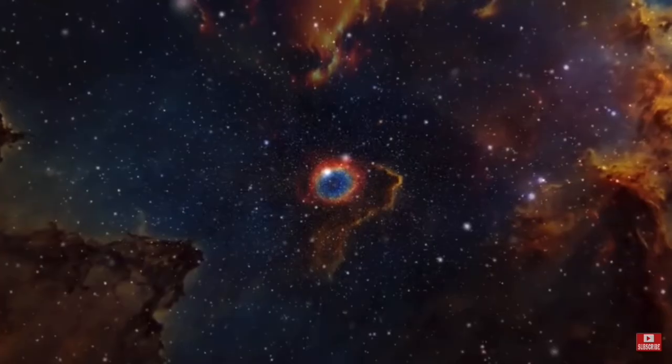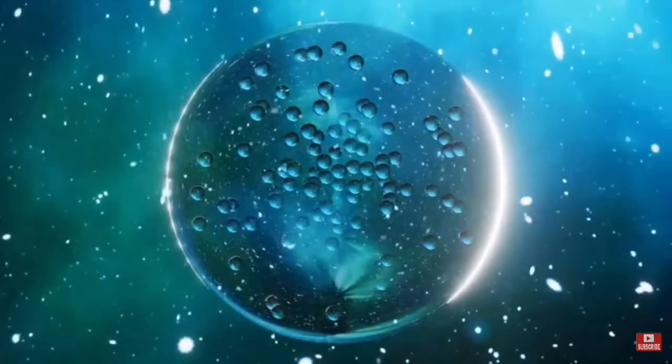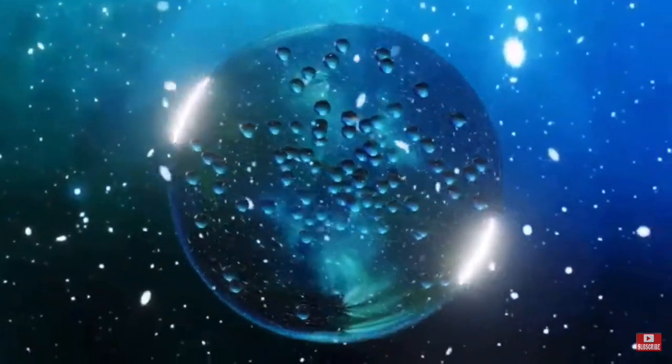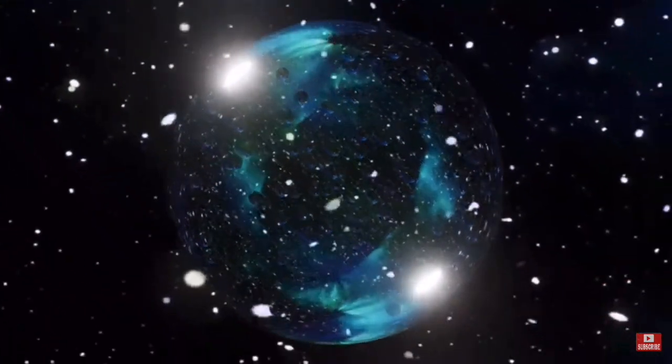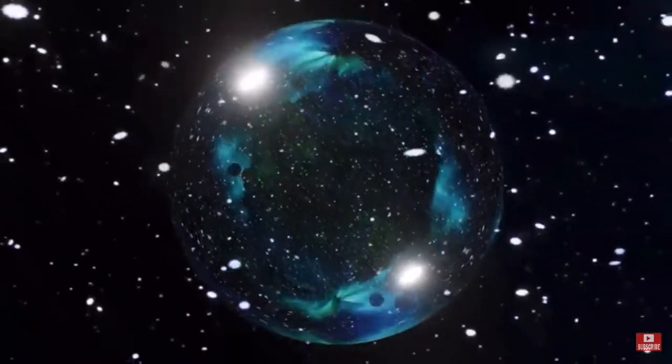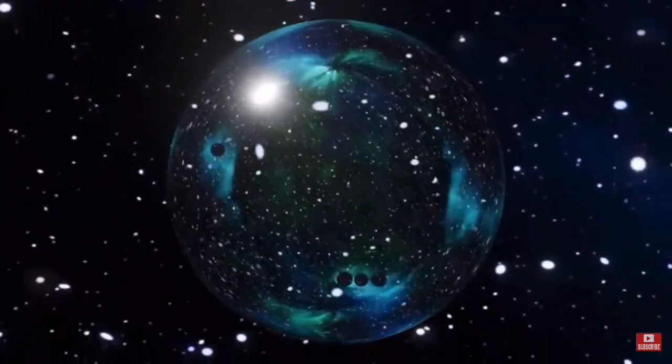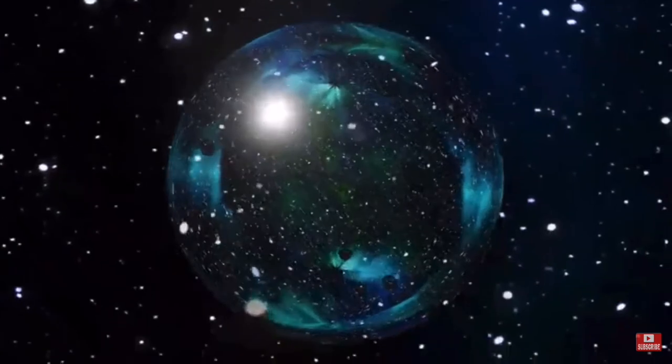Then there's the Fermi paradox, which goes like this: There are billions of stars like our sun in the Milky Way, and some of them probably have Earth-like planets with intelligent life on them. Many of these planets are billions of years older than Earth and probably developed interstellar travel, so why have we never seen any aliens?